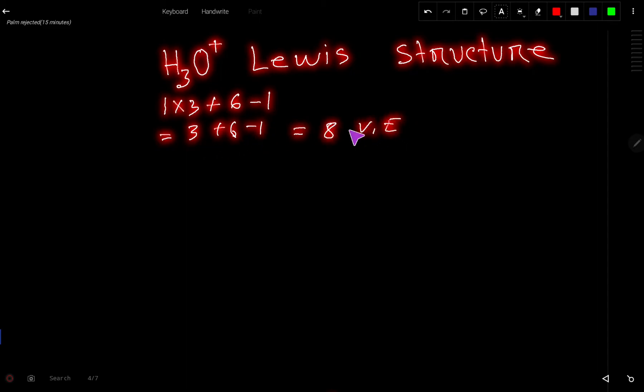So let us calculate: three times one is three, plus six is nine, minus one, that is we are getting eight valence electrons totally. Can you tell me what are the functions of these eight valence electrons? These eight valence electrons have two functions at the same time. The first function is to connect these three atoms together, and the second function is to satisfy the octet for oxygen and duet for all the hydrogen.